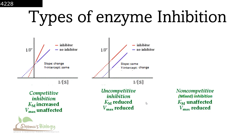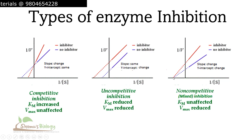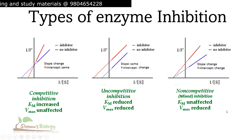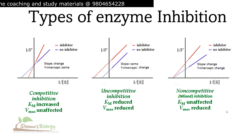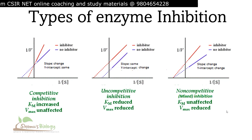In non-competitive or mixed inhibition, the Km is unaffected while Vmax is reduced. On the double reciprocal plot, the lines intersect at the same point on the x-axis but at different points on the y-axis, confirming Km is unaltered but maximum velocity is decreased. This is logical because the inhibitor binds to a separate site rather than the active site, reducing maximum velocity without affecting substrate affinity.